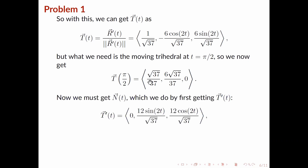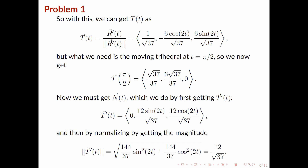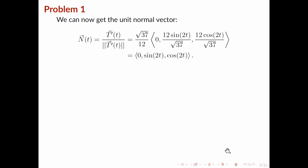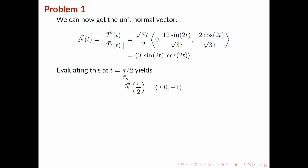Moving on, we can get the unit normal vector, which we do by first getting the derivative of T. We can verify that this is the derivative of T. Then by normalizing, we get the magnitude, and again we use the identity sine squared plus cosine squared equals 1 to simplify. Using these we can get the unit normal vector — you can verify it equals this. Finally, evaluating at t equals pi over 2 yields this vector.